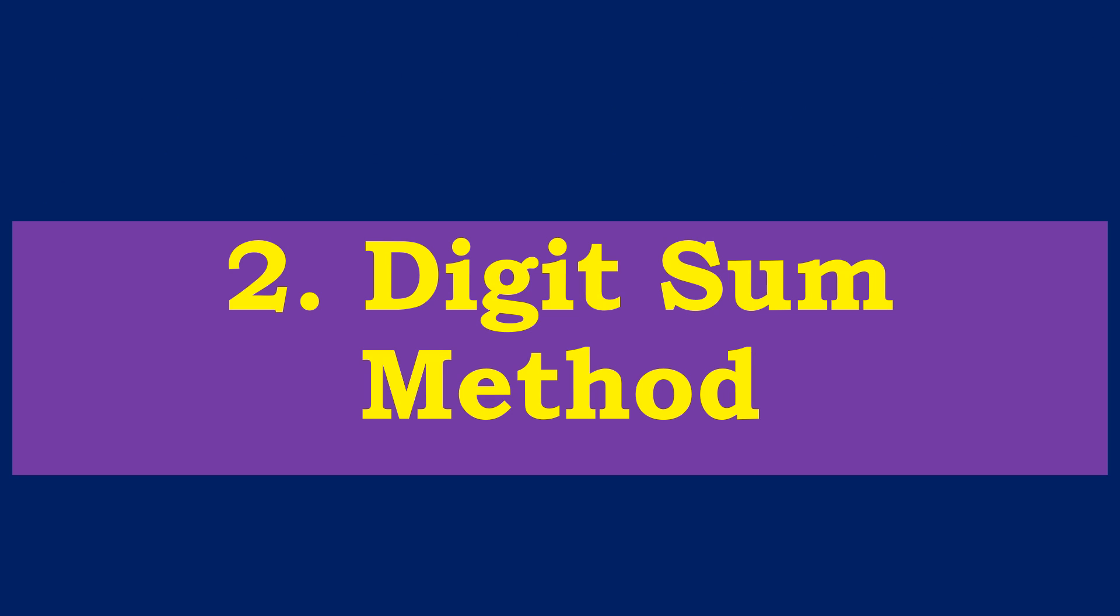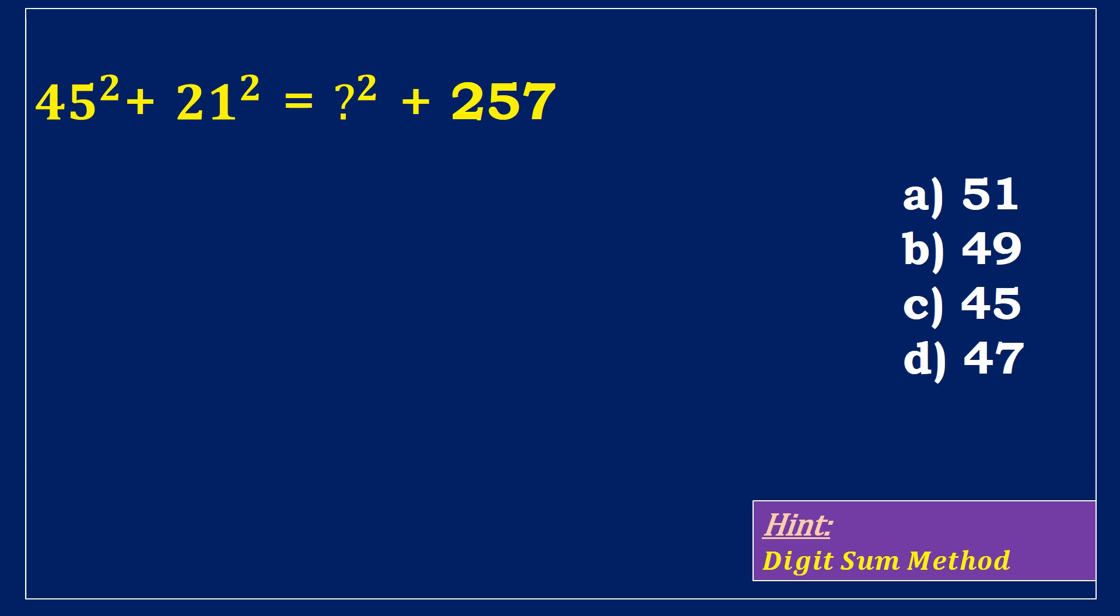Model 2. Digit sum method. Simplify the equation 45 square plus 21 square equals question mark square plus 257. What value should come in place of the question mark? We may solve the problem in a smart way by employing the digit sum approach. Digital sum means adding digits of any group of numbers. The procedure involved is very simple. We have to convert any given number into a single digit by repetitively adding up all the digits of that number. Now apply this rule to compute the simplification problems quickly.